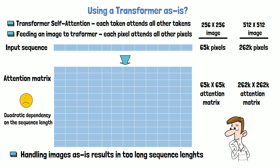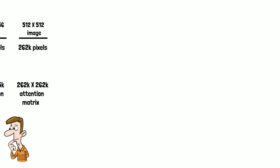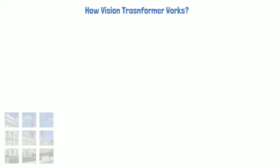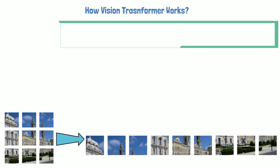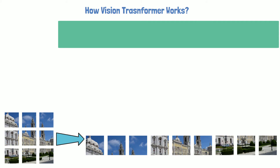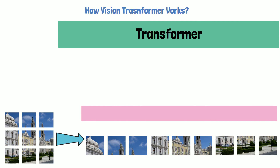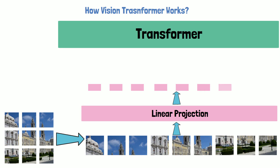So how are vision transformers able to deal with this issue? The main idea is that instead of fitting the image pixels as a sequence to the transformer, we break the image into patches, as seen in the example here. We then create a sequence of patches in order to fit that sequence to the transformer, similar to how we would feed the transformer a sequence of tokens. In order to map the patches to the dimension the transformer can work with, we pass them through a trainable linear projection layer that yields a vector for each patch with the dimensions that match the transformer.